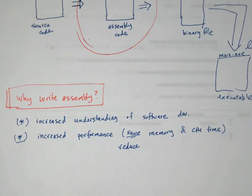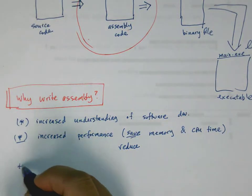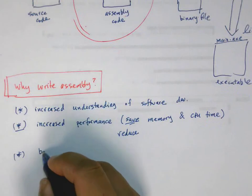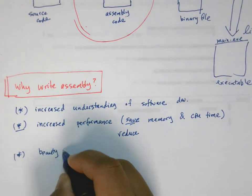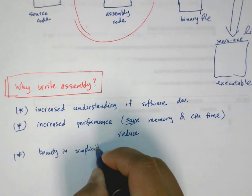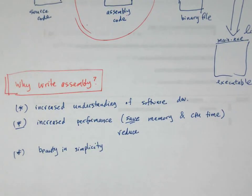One last benefit here, and this is kind of my personal thing: there is a beauty in the simplicity of the assembly language. I'll get into this more in the next video, but the assembly language is basically just three, sometimes four words per line. That's it.